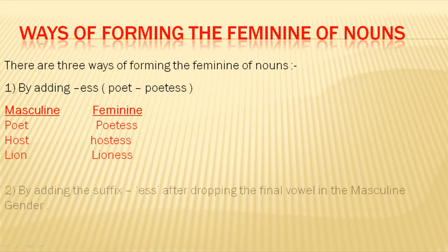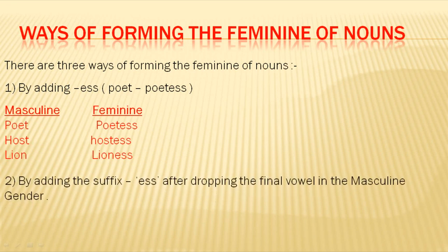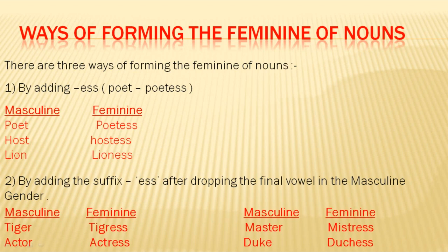According to the second rule: by adding the suffix ESS after dropping the final vowel in the masculine. For example: tiger becomes tigress, actor becomes actress, master becomes mistress, duke becomes duchess.